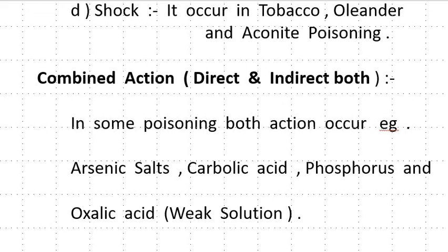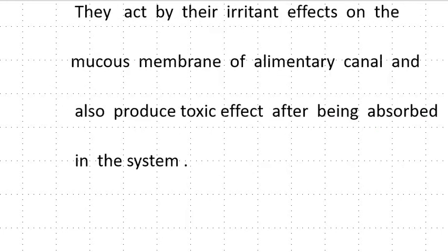Combined action means both direct and indirect. In some poisoning, both actions occur. Example: phosphorus and oxalic acid. They act by their irritant effect on the mucous membrane of the alimentary canal and also produce systemic toxicity effects.